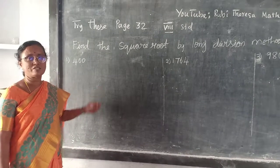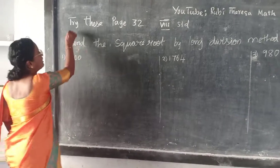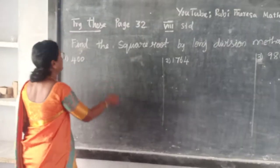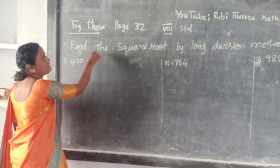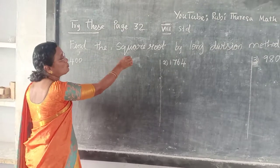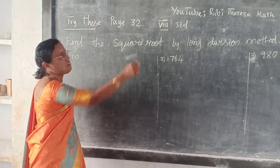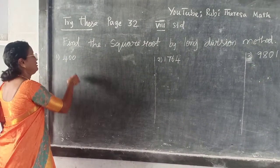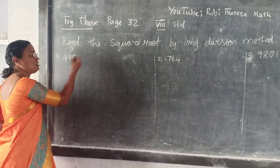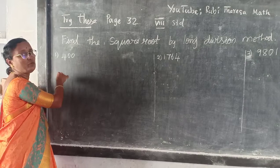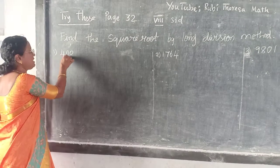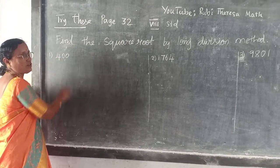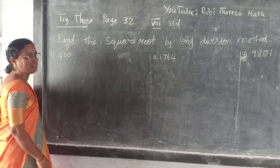Listen here children, try this exchange: find the square root by long division method. But without that, you will be able to say — by seeing this number you will be able to say what is the answer.